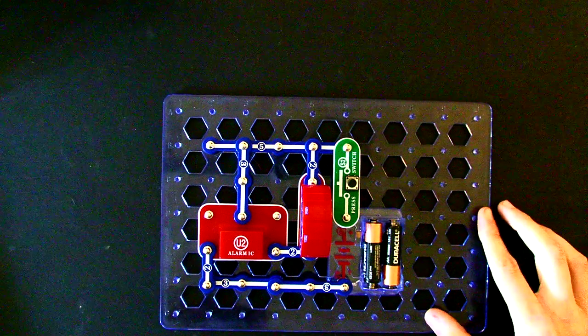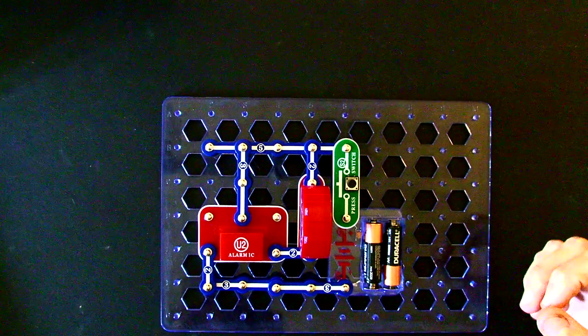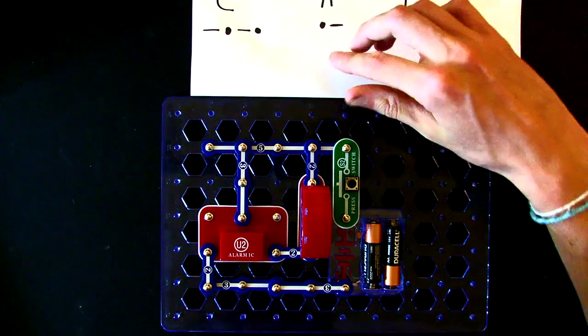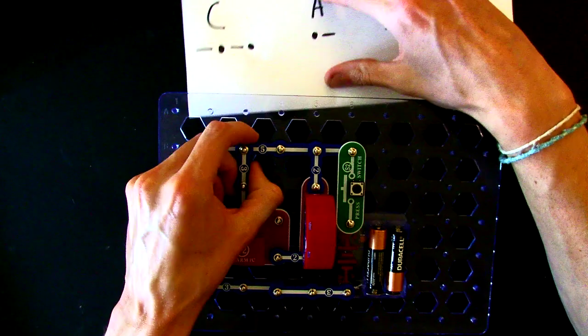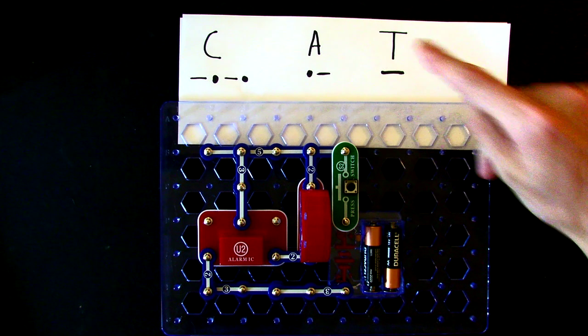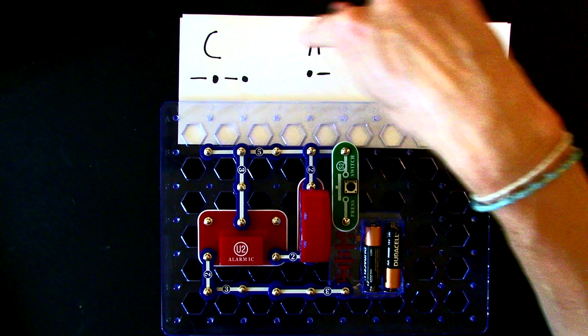Now, the reason this circuit is so cool is we can use it to communicate in Morse code. Let's say I wanted to send a secret message across the classroom, but I didn't want anyone to understand it. I could send the message cat, C-A-T.